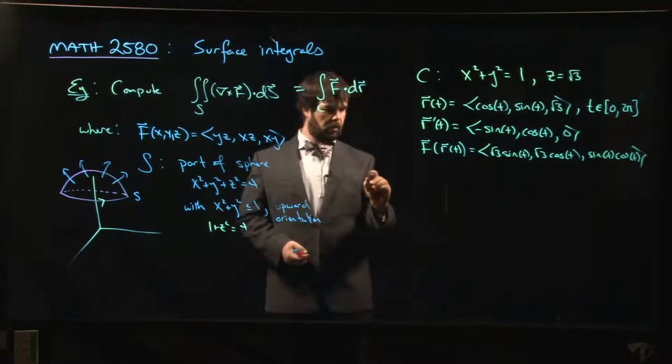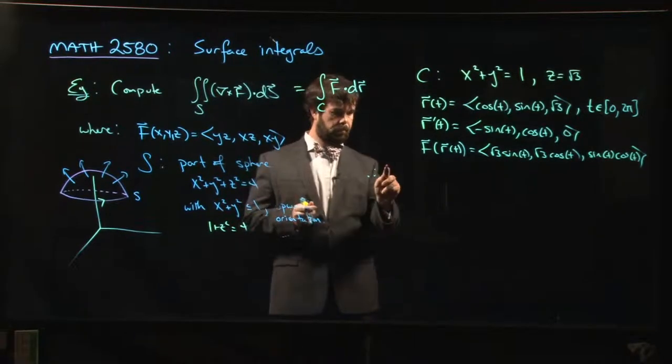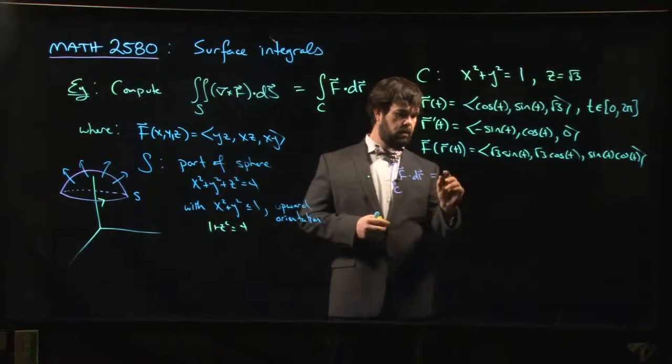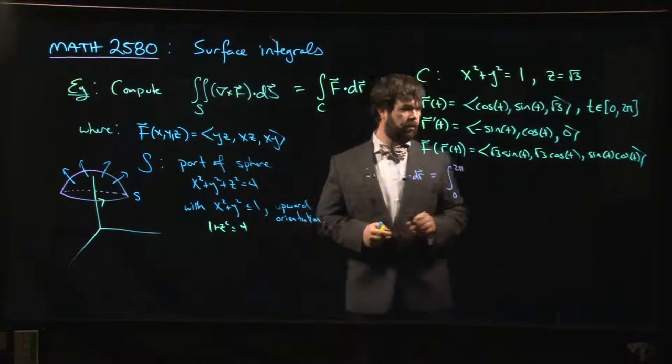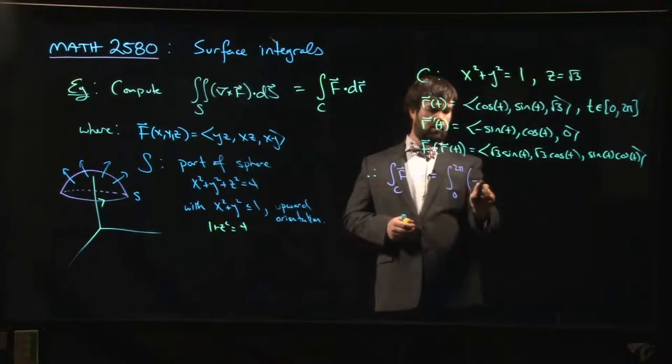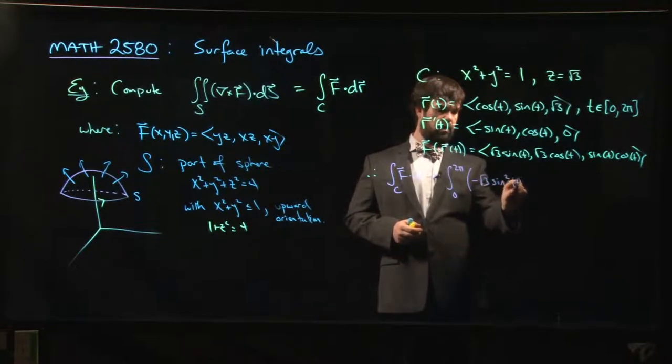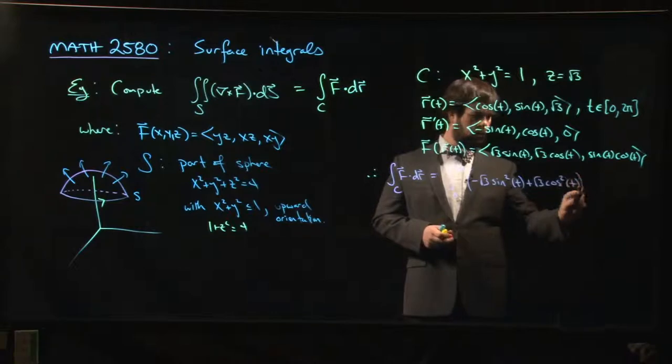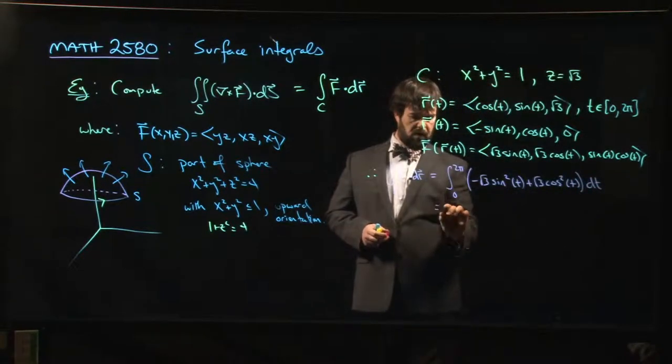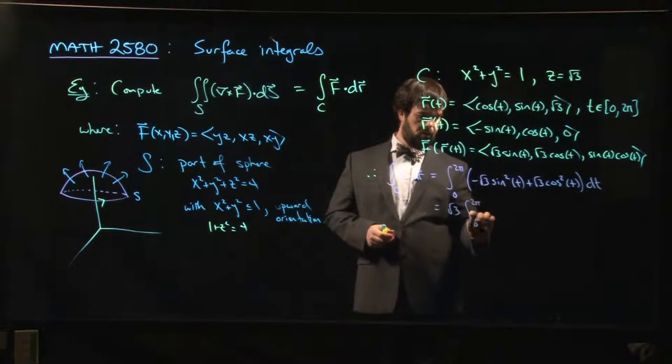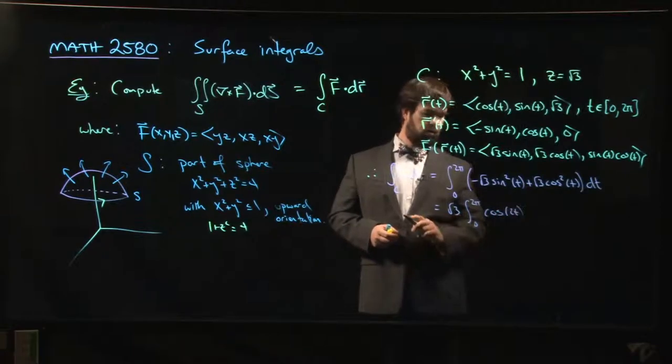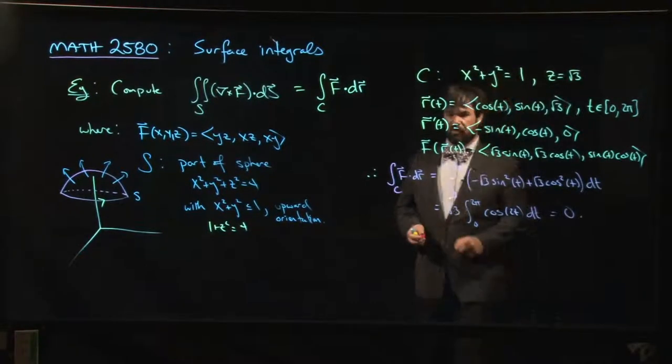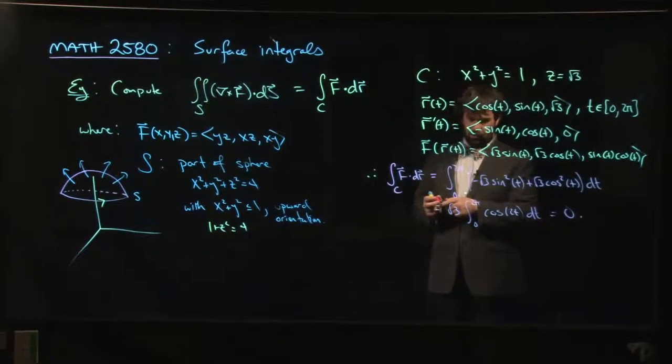And so that means that the integral around c of f dot dr is going to be the integral from 0 to 2π of, let's see, we've got to take the dot product. It's going to be minus root 3 sine squared t plus root 3 cosine squared t plus 0 dt. So that is root 3 integral from 0 to 2π of cos 2t, using a trig identity, dt. We know that's going to give us 0. We integrate to sine of 2t, endpoints both give us 0, so the answer is 0.